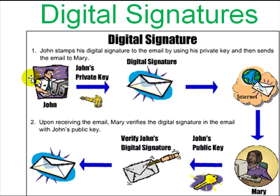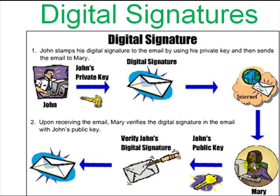Say John wants to send data to Mary. John uses his private key to create a digital signature and then sends the email to Mary. Mary uses John's public key, which is already published on the internet or she might have a copy of it, and checks that John has actually signed the document. She knows that only John could have signed it because nobody else has the private key to match the public key.